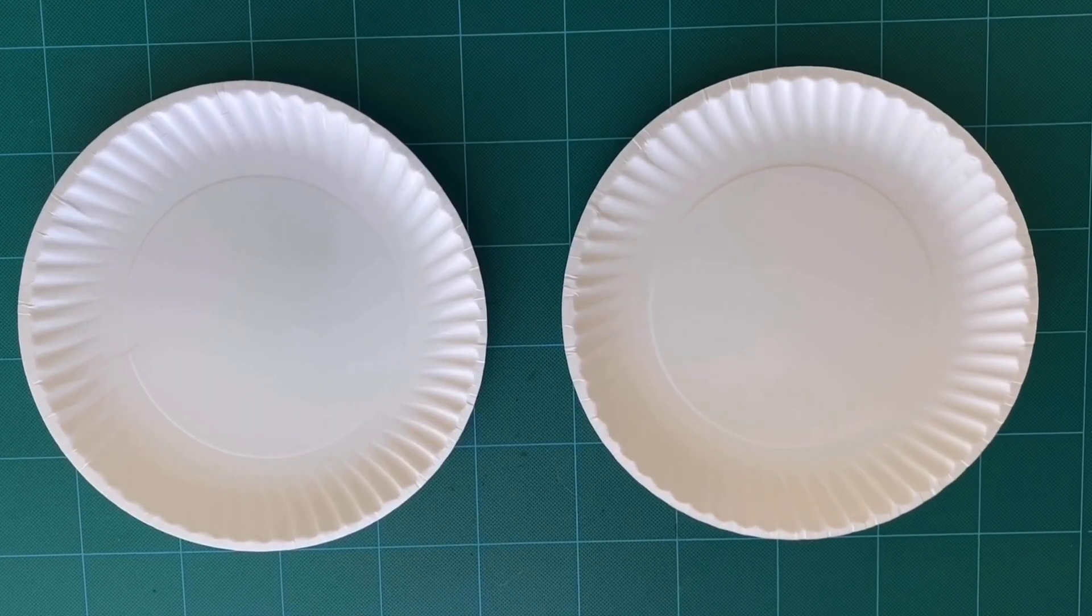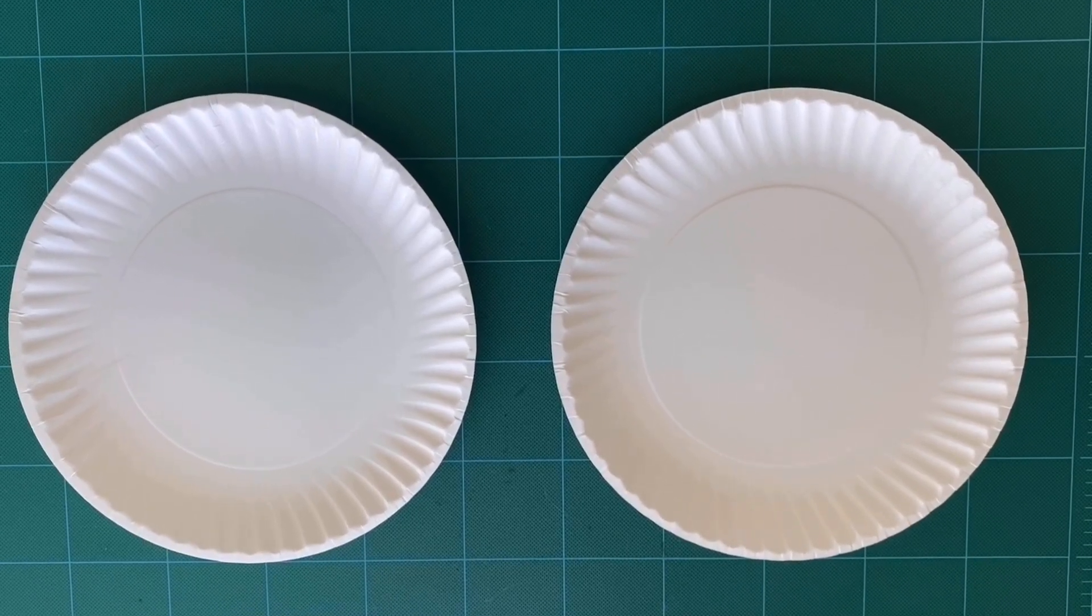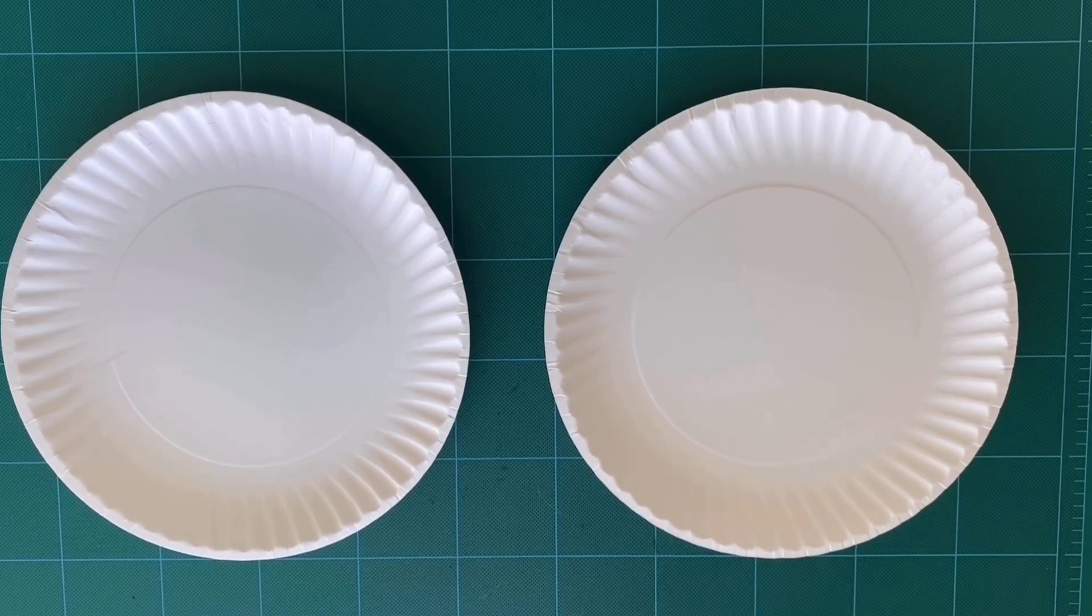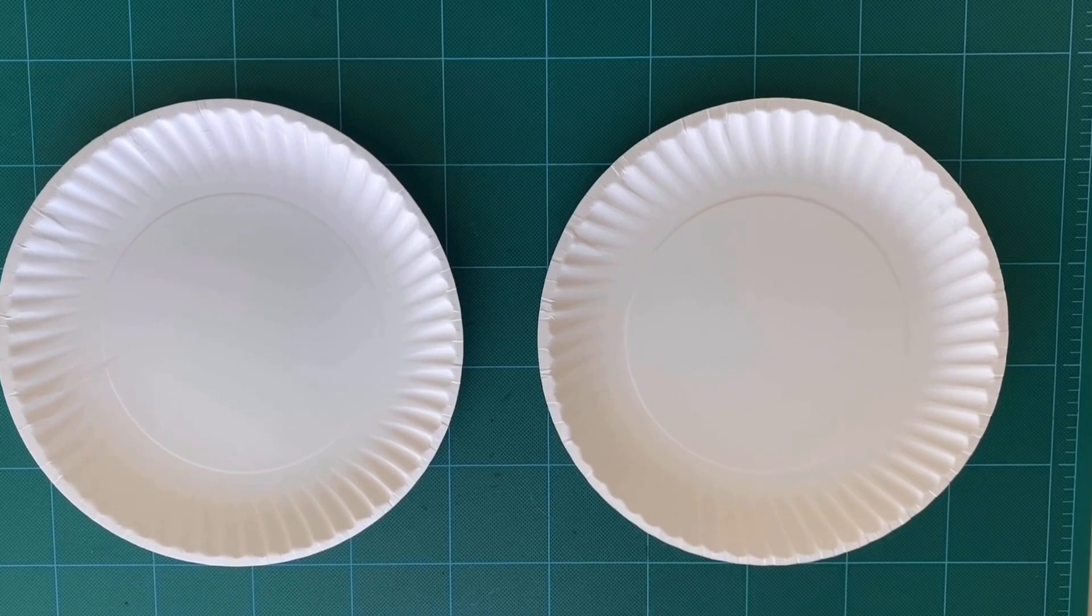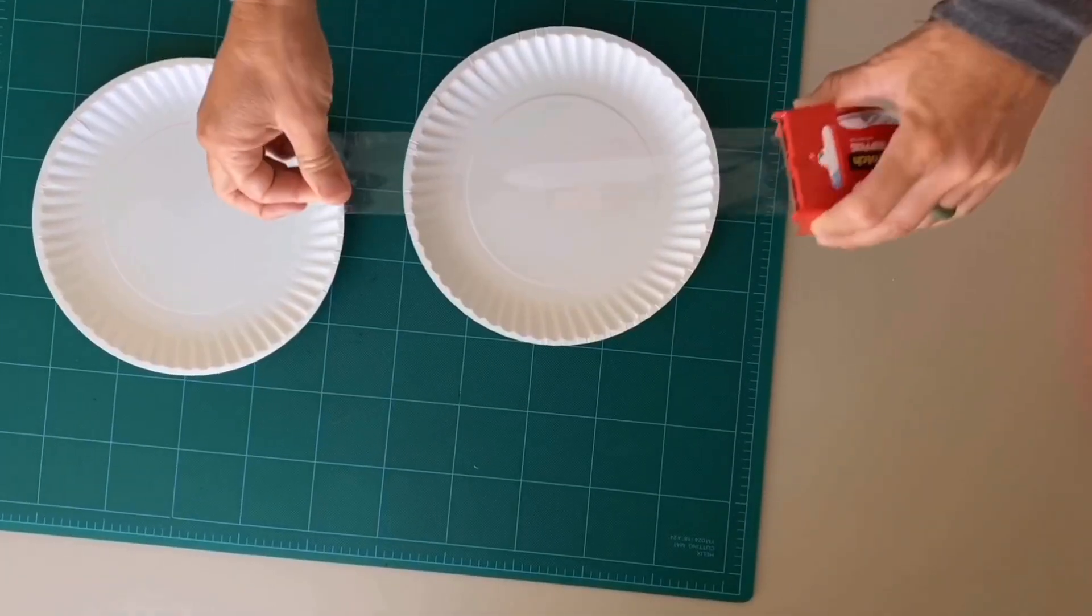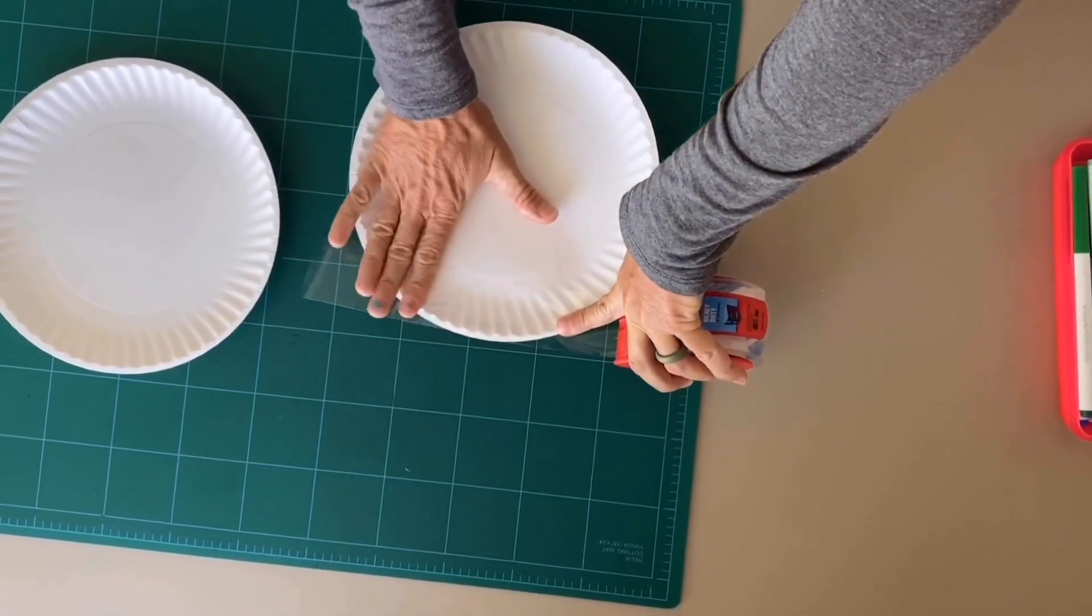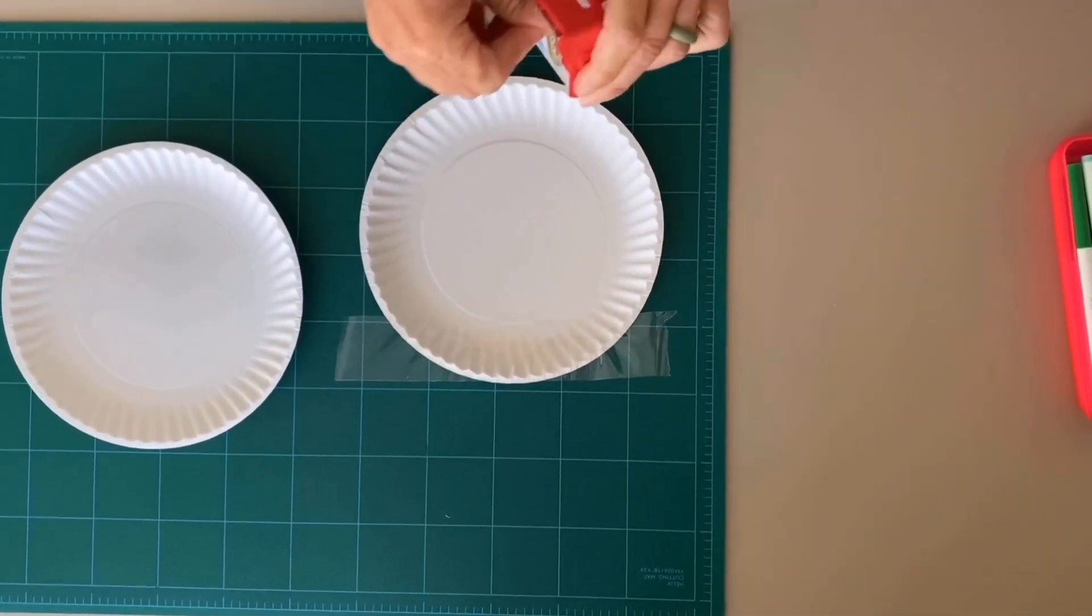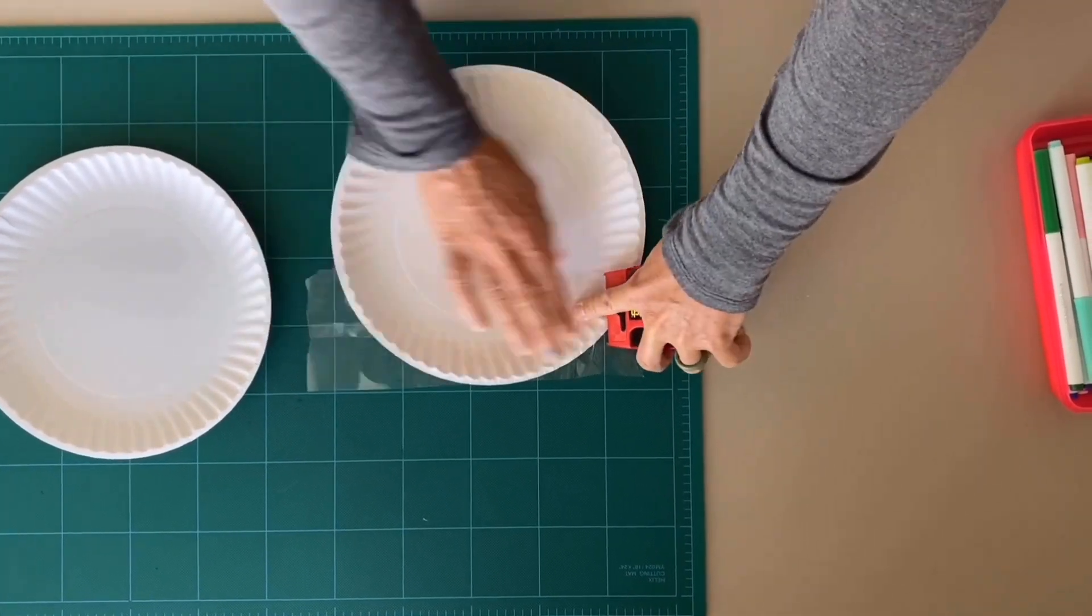First you're going to take your two plates and flip them over like you're putting food on top of them. Your next step, you're going to place the tape on top, letting the excess hang over. I'm going to show you that now. So you're going to take your tape and cover the plate with it, leaving the extras on the side. And you're going to do that to both plates all the way until they're all covered.